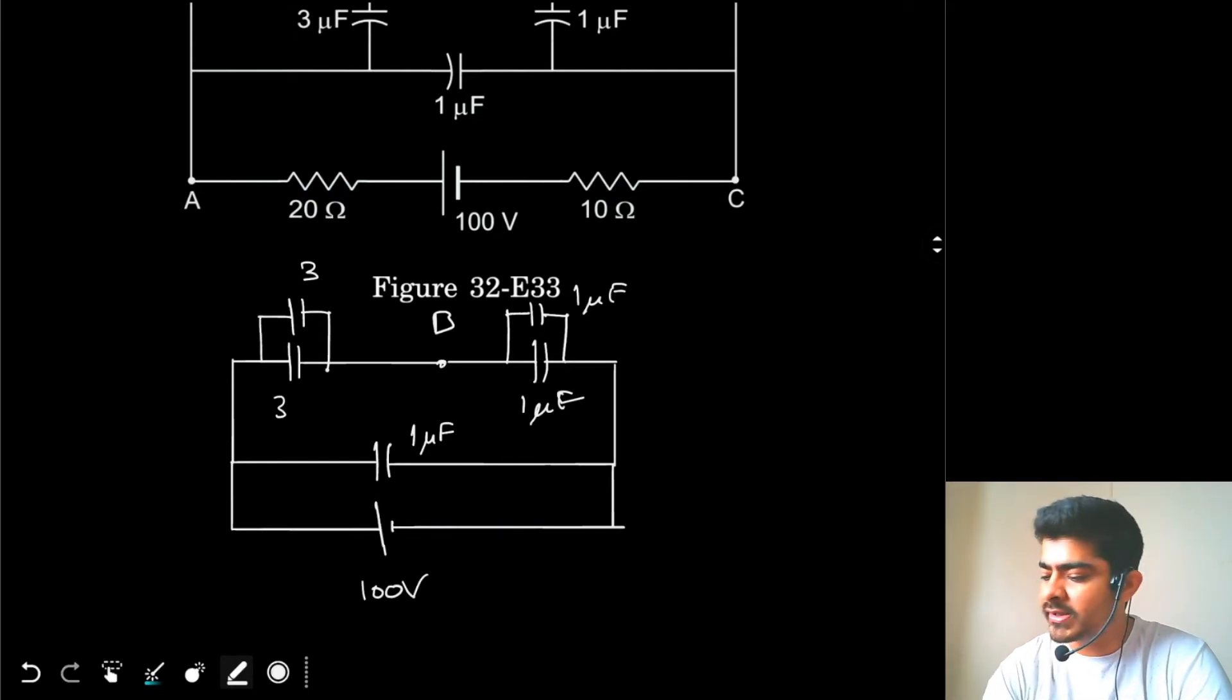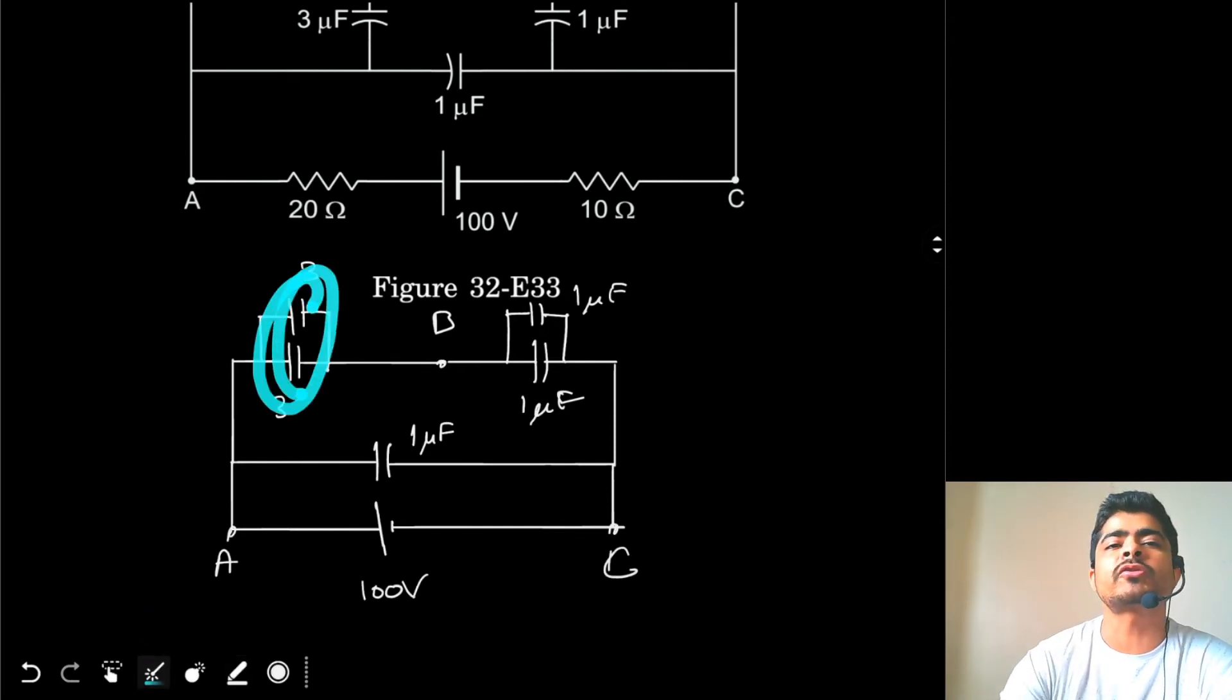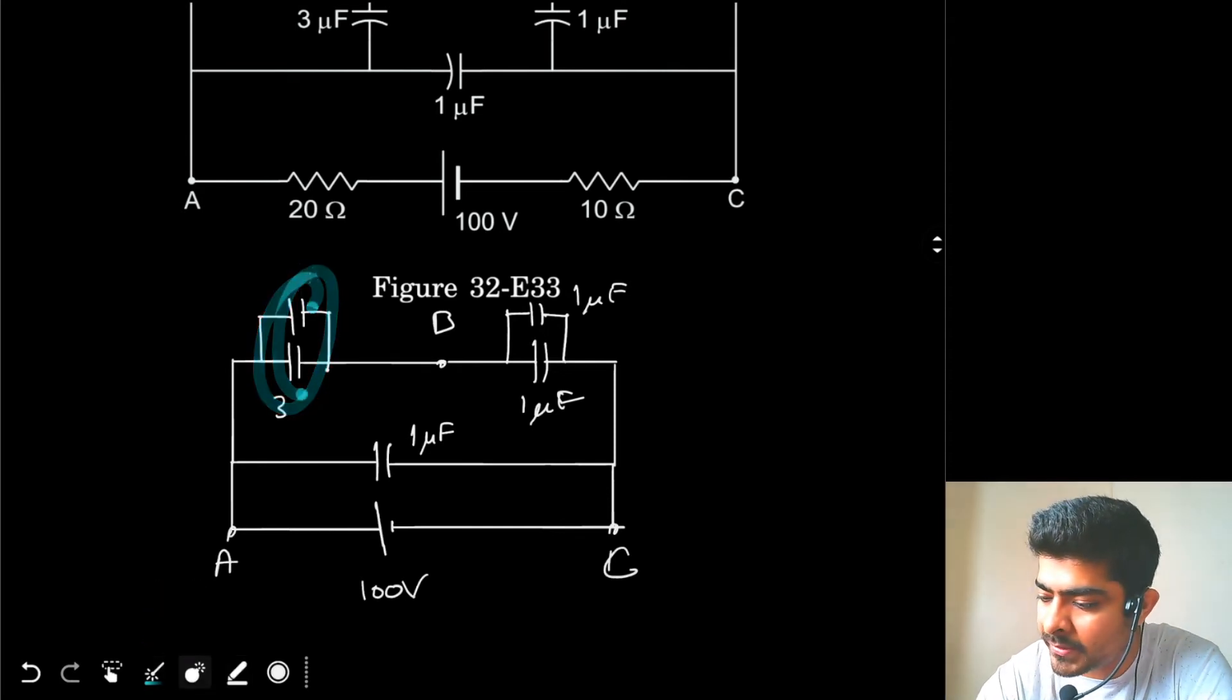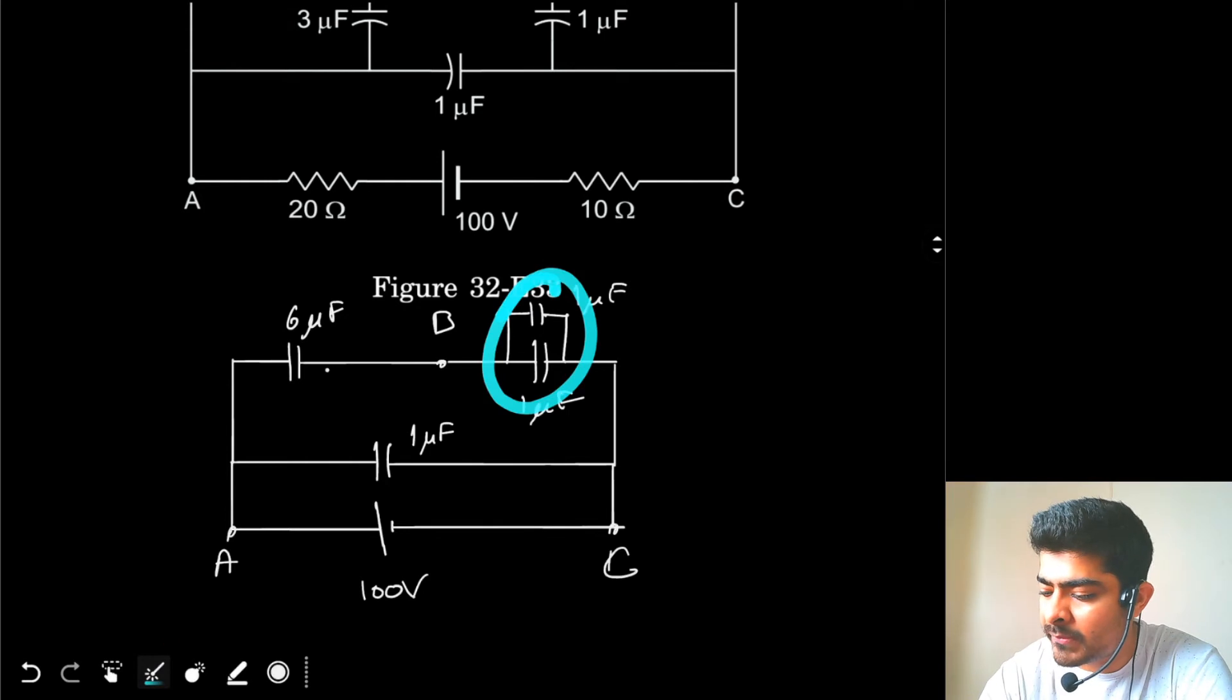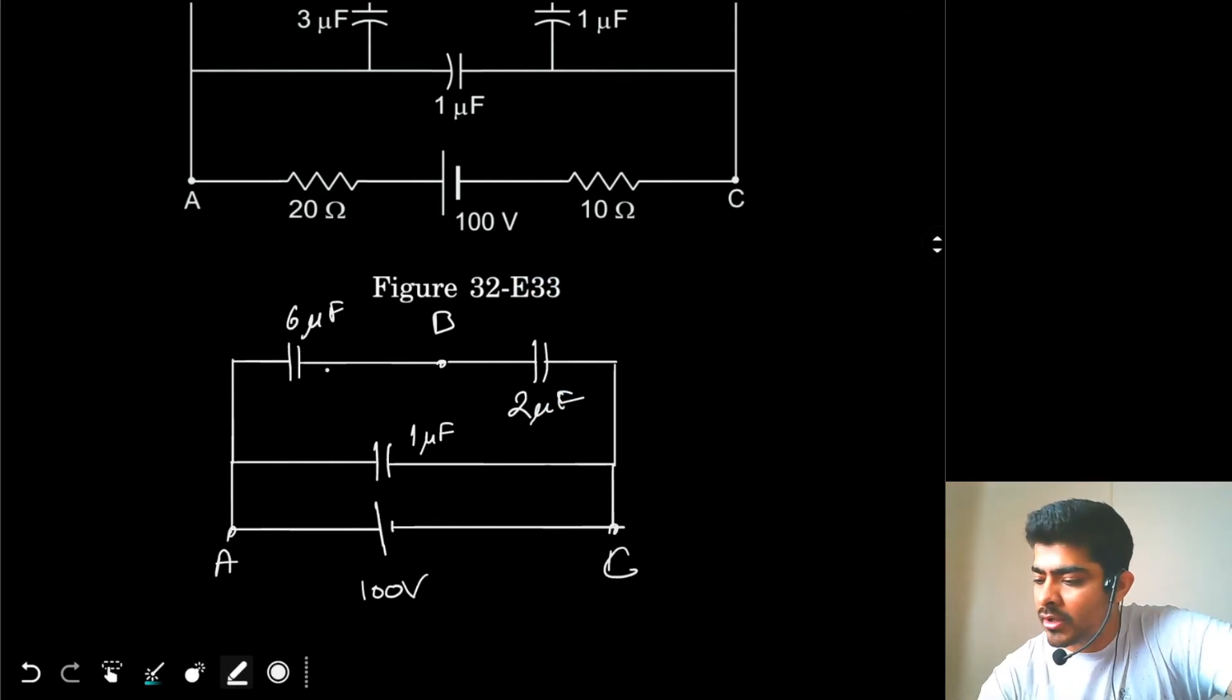So now we just have to calculate the charge on the capacitors and find the potential difference. So this is the point A, this is the point C. Now let's combine the 3uF capacitors. These two are in parallel, so you combine them and you get 6uF capacitor. So I replace this with a 6uF capacitor. Similarly these two will combine to give you 2uF capacitor. So here I got 2uF capacitor. Now these two are in series, so both of them should have same charge.